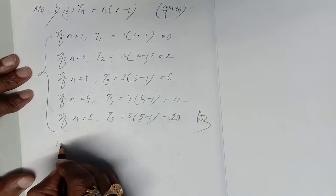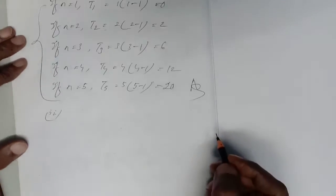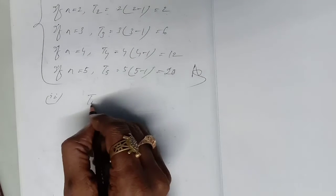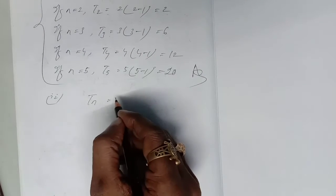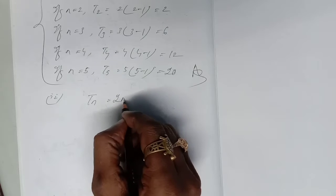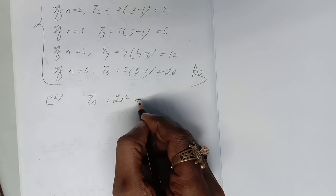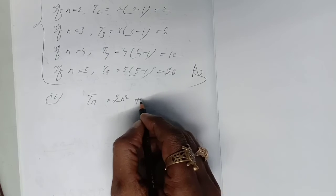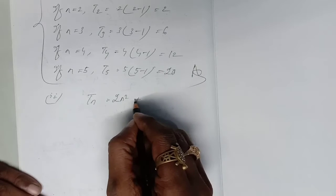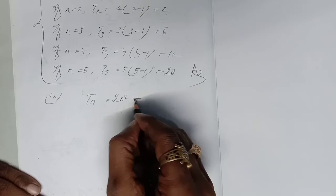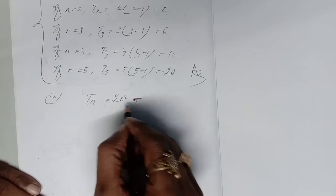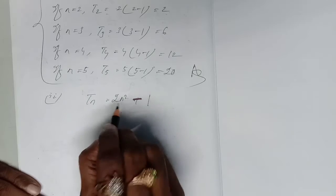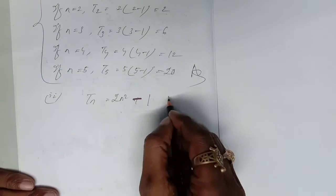Just see the second part. The nth term Tn is given as 2n² − 1. By mistake a plus sign was written; the correct question is 2n² − 1. This is the nth term given.